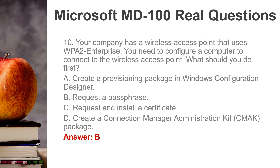Question 10. Your company has a wireless access point that uses WPA2 Enterprise. You need to configure a computer to connect to the wireless access point. What should you do first? A. Create a provisioning package in Windows Configuration Designer. B. Request a passphrase. C. Request and install a certificate. D. Create a Connection Manager Administration Kit package. Answer: B.